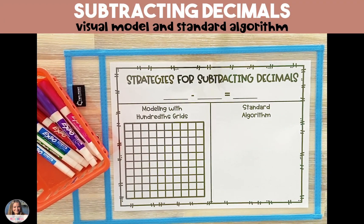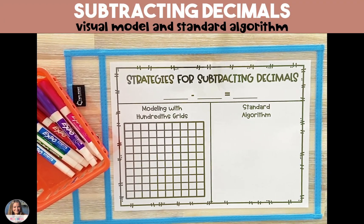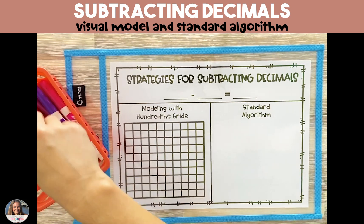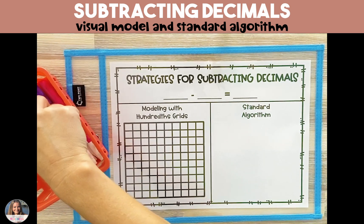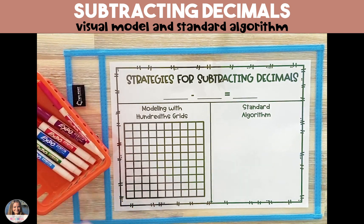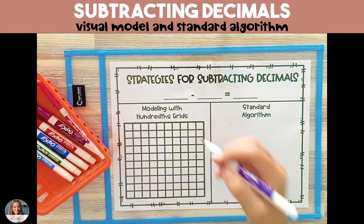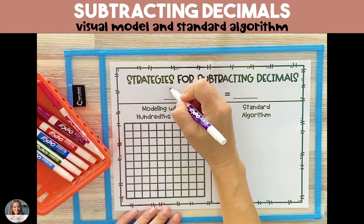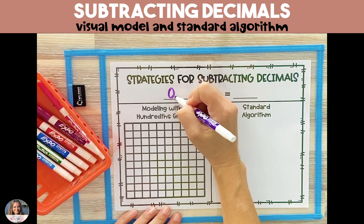I'm going to show you how to use a visual model and the standard algorithm to subtract two decimal numbers. The visual model is a hundredths grid that has 10 rows and 10 columns.